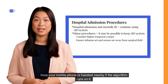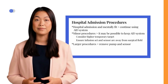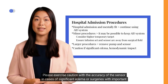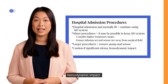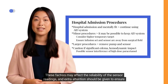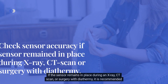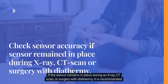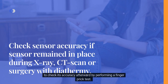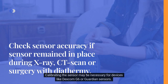Keep your mobile phone or handset nearby if the algorithm runs on it. For larger procedures involving diathermy, or when the surgical team does not agree, remove the pump and sensor and switch off auto mode. Exercise caution with sensor accuracy in cases of significant edema or surgeries with important hemodynamic impact, and be mindful of frequent intravenous use of paracetamol during hospital admissions, as these may affect sensor readings. If the sensor remains in place during an X-ray, CT scan, or surgery with diathermy, check its accuracy afterward with a finger prick test. Calibrating the sensor may be necessary for devices like Dexcom G6 or Guardian sensors.